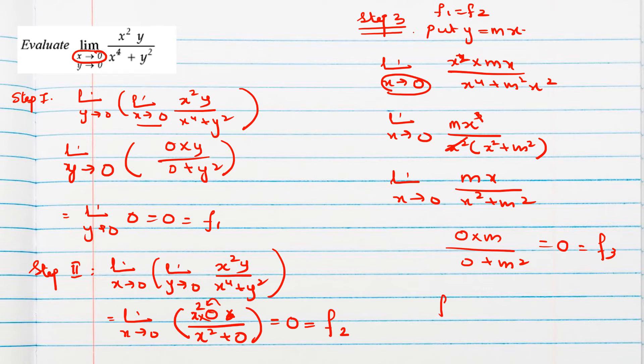So what we got here: f1, f2, f3 all are equal. That means we have to check one more step. Step 4, we will substitute y is equal to mx square in the same question, and limit x tends to 0 as provided in the question. So x square y was given in the question, so we will put mx square.